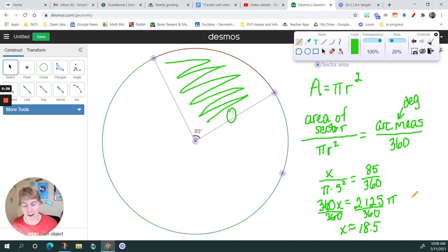Okay, so area of a sector is just part of the area. And we find out what part by setting up and solving a proportion.